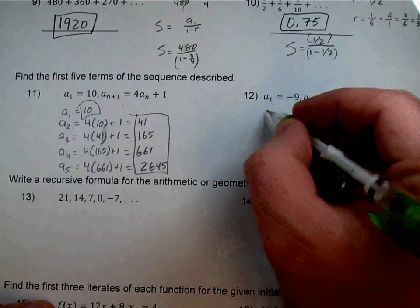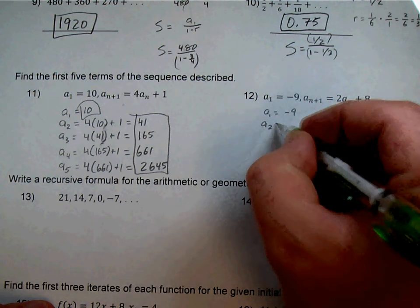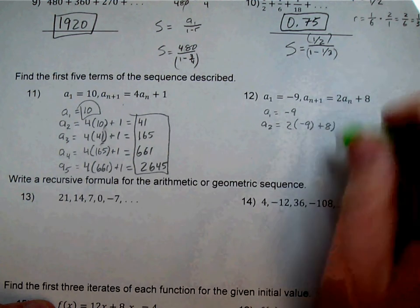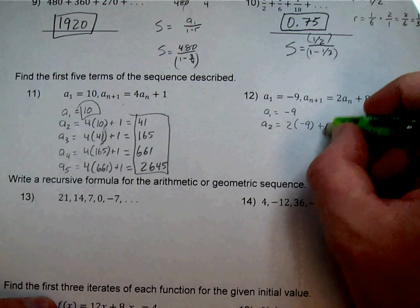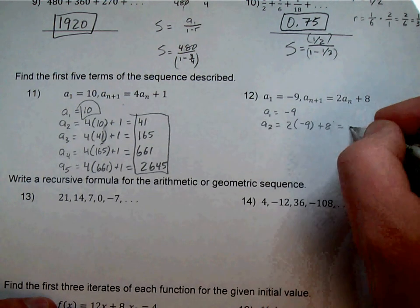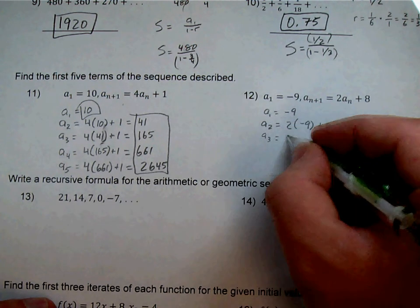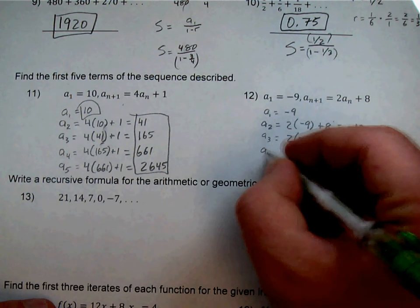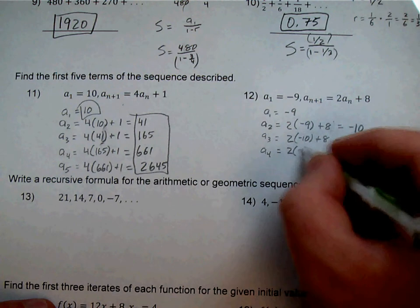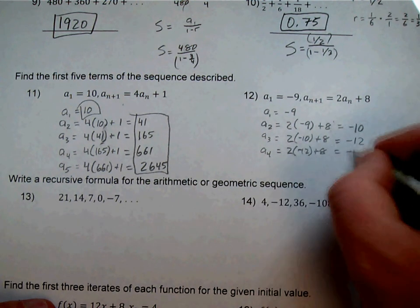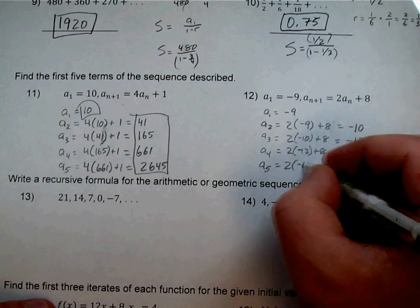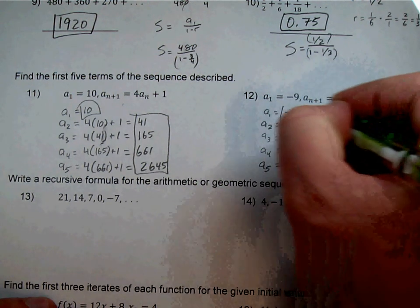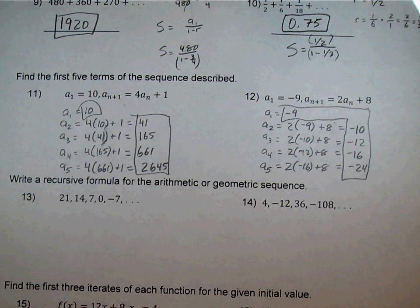Number 12: first term is negative 9. The rule is 2 times the previous term plus 8. So: 2 times negative 9 plus 8 gives negative 18 plus 8, which is negative 10. Then 2 times negative 10 plus 8 is negative 12. Then 2 times negative 12 plus 8 is negative 16. Then 2 times negative 16 plus 8 is negative 24. First five terms: negative 9, negative 10, negative 12, negative 16, negative 24.